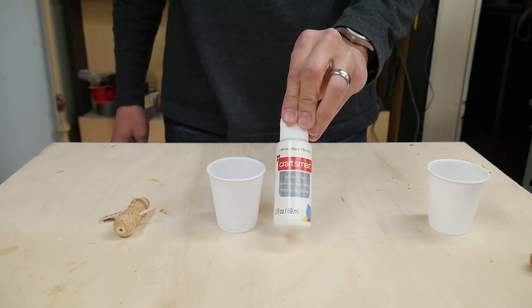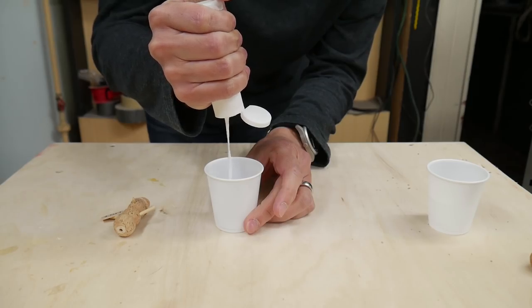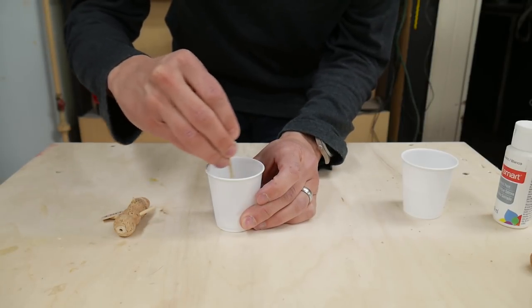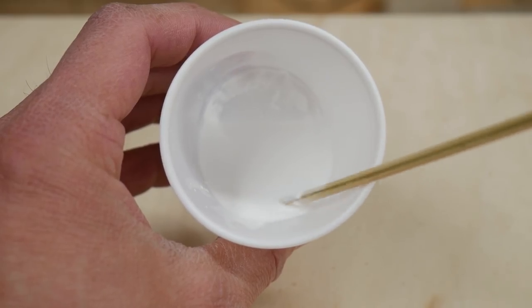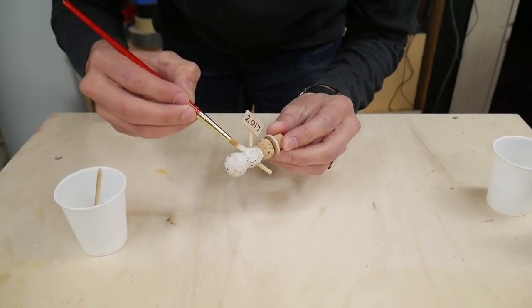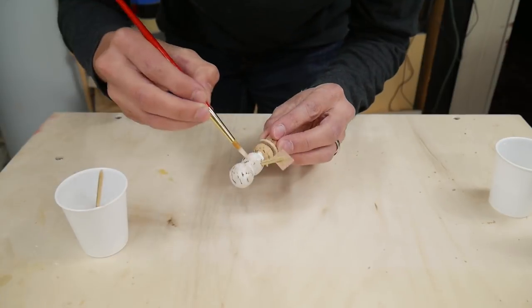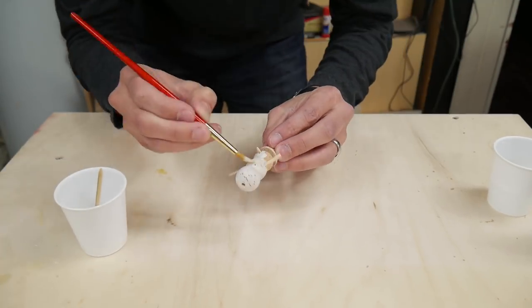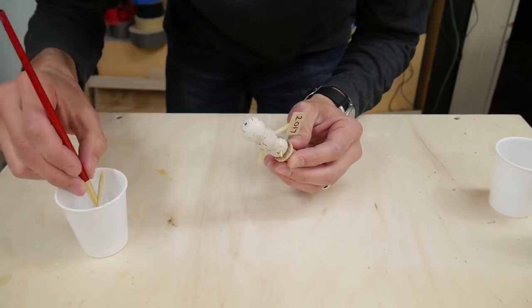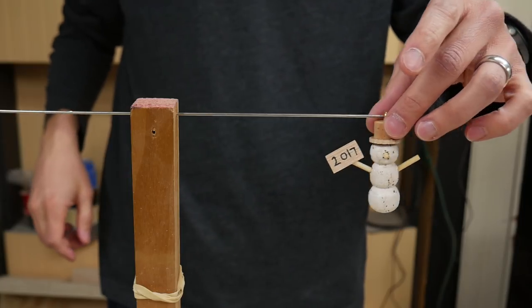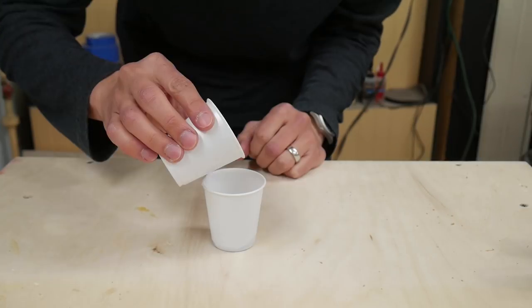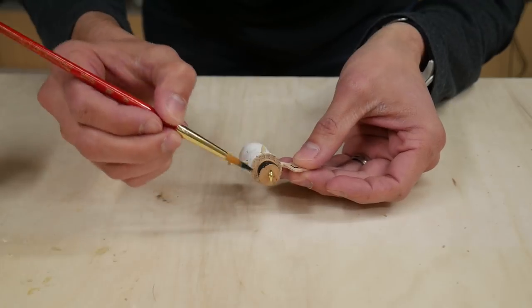I got some white acrylic craft paint and thinned it with a little bit of water. It was about a 50-50 mix. Then I painted the body of the snowman with this thinned white paint. I actually made the mix a bit too thin and had to go back and apply a second coat because one coat wasn't quite dark enough for my taste. After the white had dried, I mixed up some black acrylic craft paint and water just like before and painted the hat.